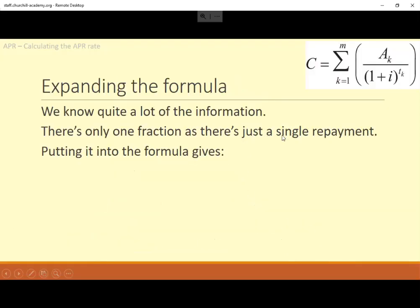There's only one fraction because there's only one repayment. So going from K equals the first repayment up to how many repayments there are is from one to one. If you substitute all those things in, C is £22,000. The repayment is £26,200 over 1 plus the interest rate to the power of the time since the start of the loan, so two. We actually know all of those things. All we need is to just rearrange it to get that I by itself.